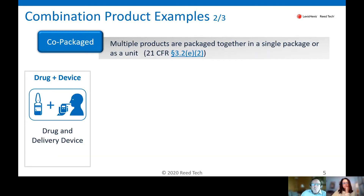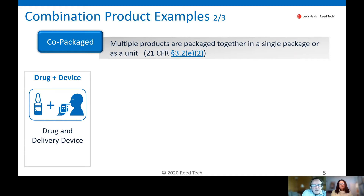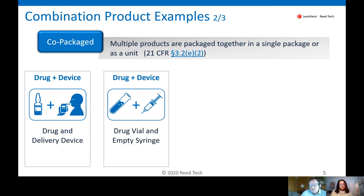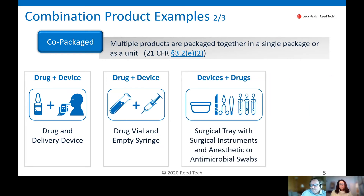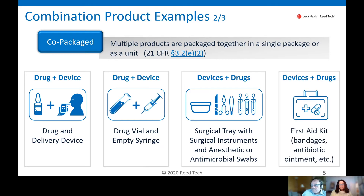Let's move over to co-packaged examples. In this case, we have multiple products — a device and a drug — packaged together, but you can identify the individual components. A common example might be a drug and a delivery device, such as an inhaler where you place a capsule, assemble it, and apply the drug to the patient. Another common example is a drug vial with an empty syringe. Surgical trays with drug components would be another example, and a first aid kit containing devices such as bandages and drugs like antibiotic ointment.